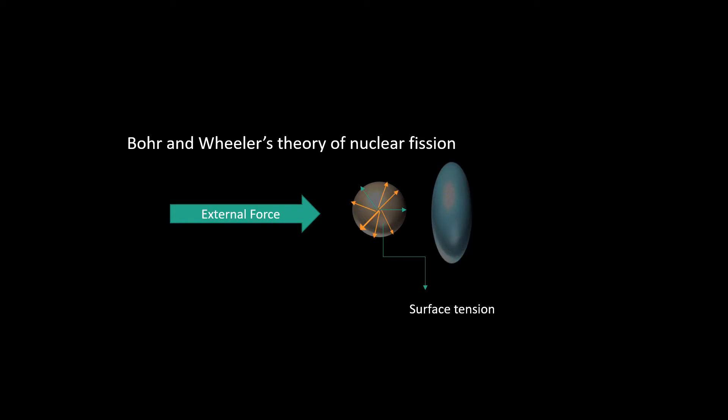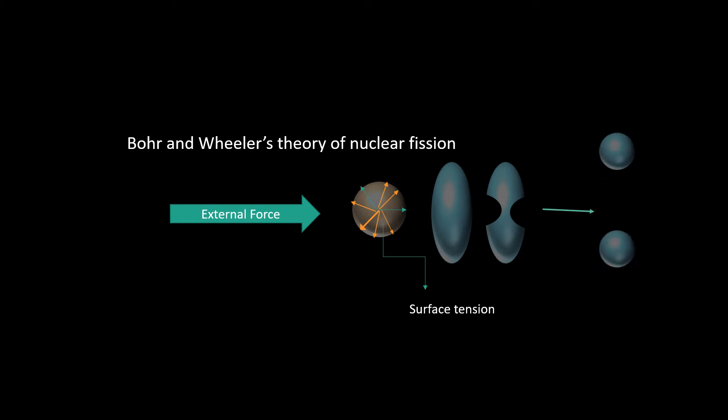If the external force is sufficiently large, the ellipsoidal shape may change into a dumbbell shape and break into two portions. This analogy may be extended to a nucleus which behaves like a liquid drop.